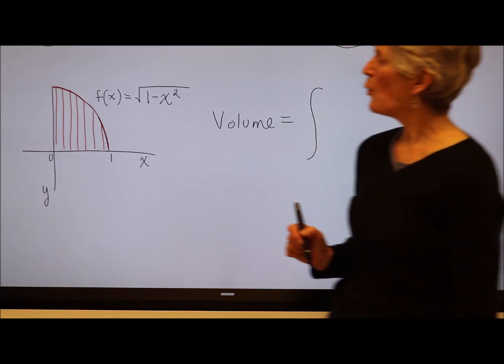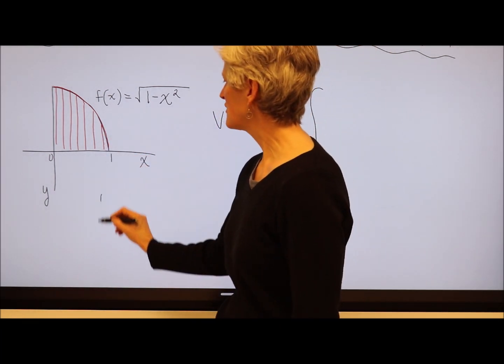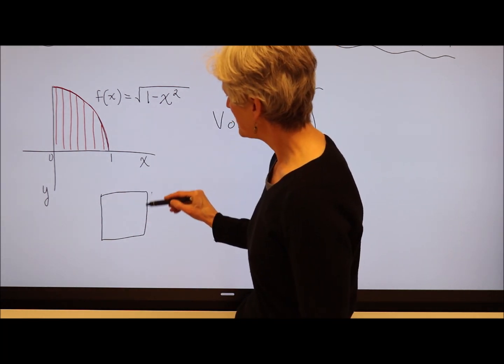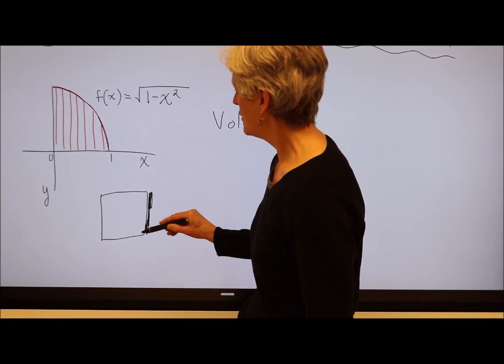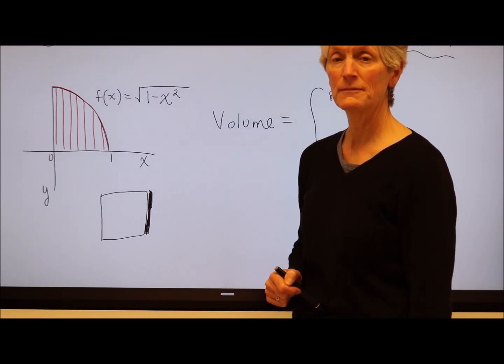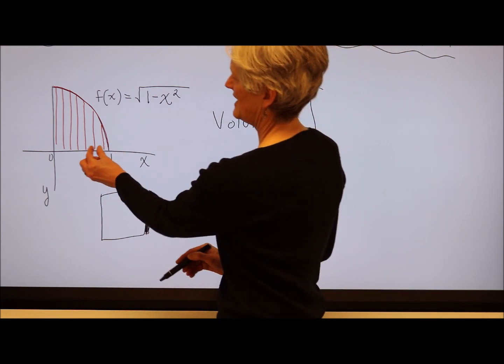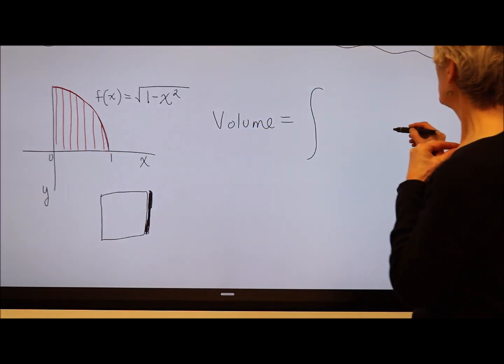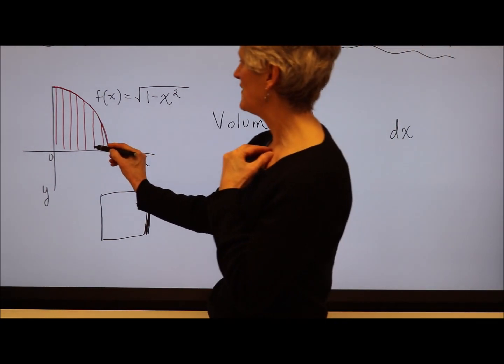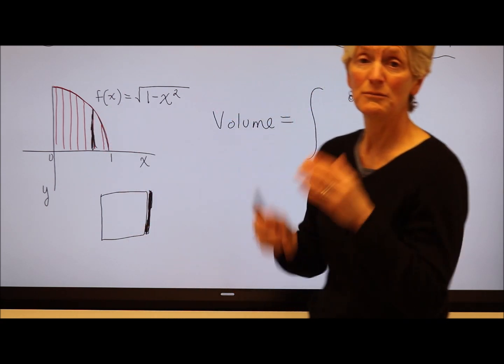So let's think about what the volume of each little slice would be. And each slice in this case is an infinitely thin square. You can think of it like a slice of bread. Okay? Now, its thickness is going to be my change at x. So that part is just my dx, right?